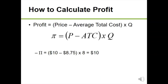That gives us a profit of $10. We maximize profit where marginal revenue equals marginal cost. We can also calculate profit as the difference between price and average total cost — that's the height of the profit rectangle — multiplied by quantity. So profit equals (P − ATC) × Q: ($10 − $8.75) × 8 = $1.25 × 8 = $10 total profit.